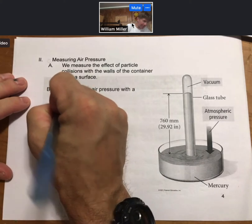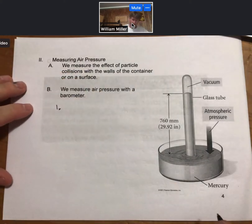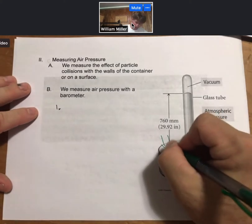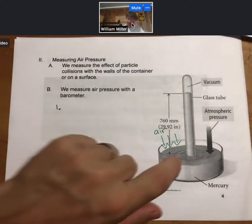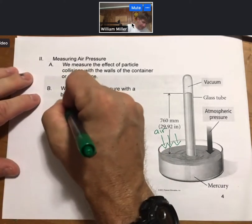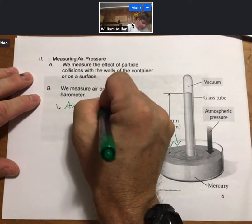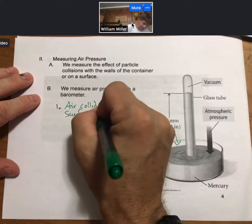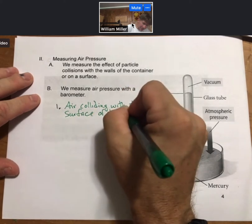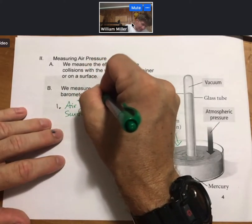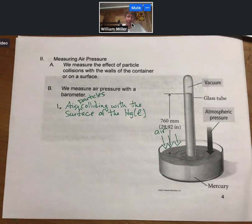In a barometer, there's air colliding with the surface of the mercury, creating pressure. Air particles colliding with the surface of the liquid mercury and creating pressure.